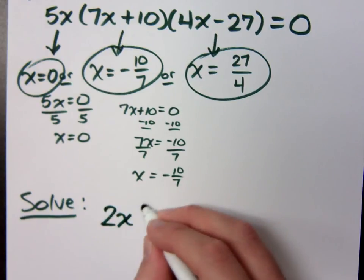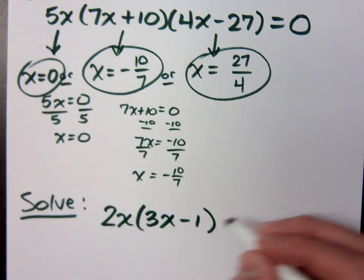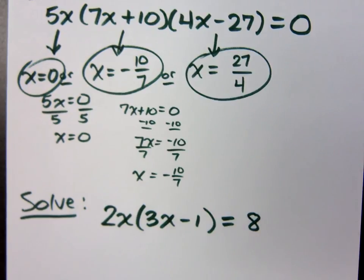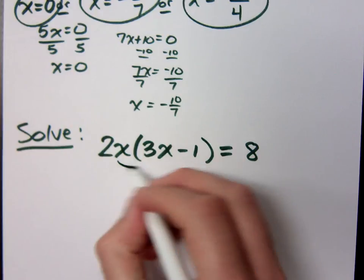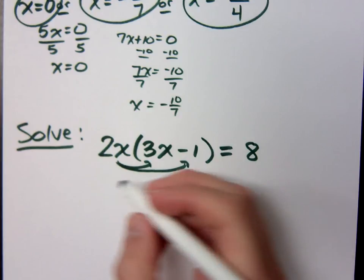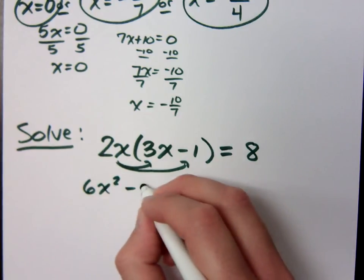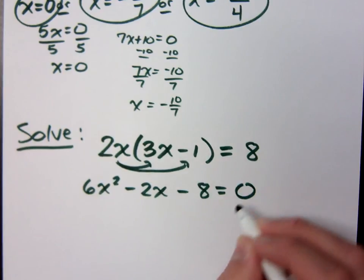Okay, let's take 2x times 3x minus 1 is equal to 8. What should I do here? I have to have it equal to zero, but I can't do that with the 8 over there. Distribute 2x. Distribute. So what do I have? 6x squared minus 2x minus 8 is equal to zero, right? Go ahead and move the 8 over.